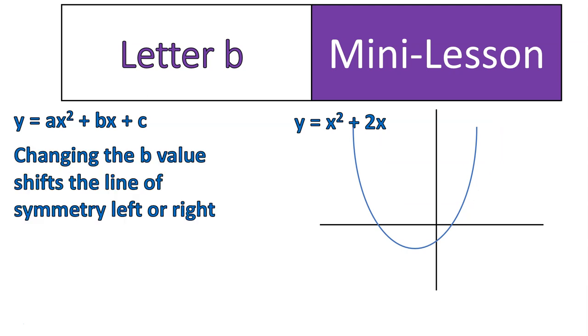Okay. Basically, changing the B value shifts the line of symmetry left or right. Now, it also can have changes up and down. So here's another example. If I have x squared minus 3x, then it would actually do this.